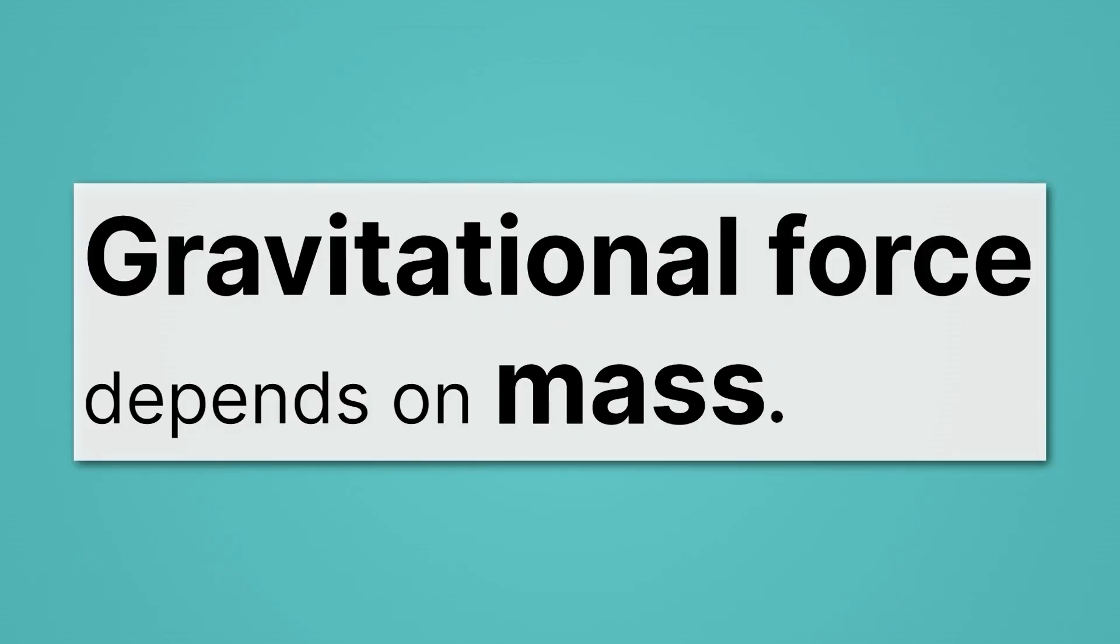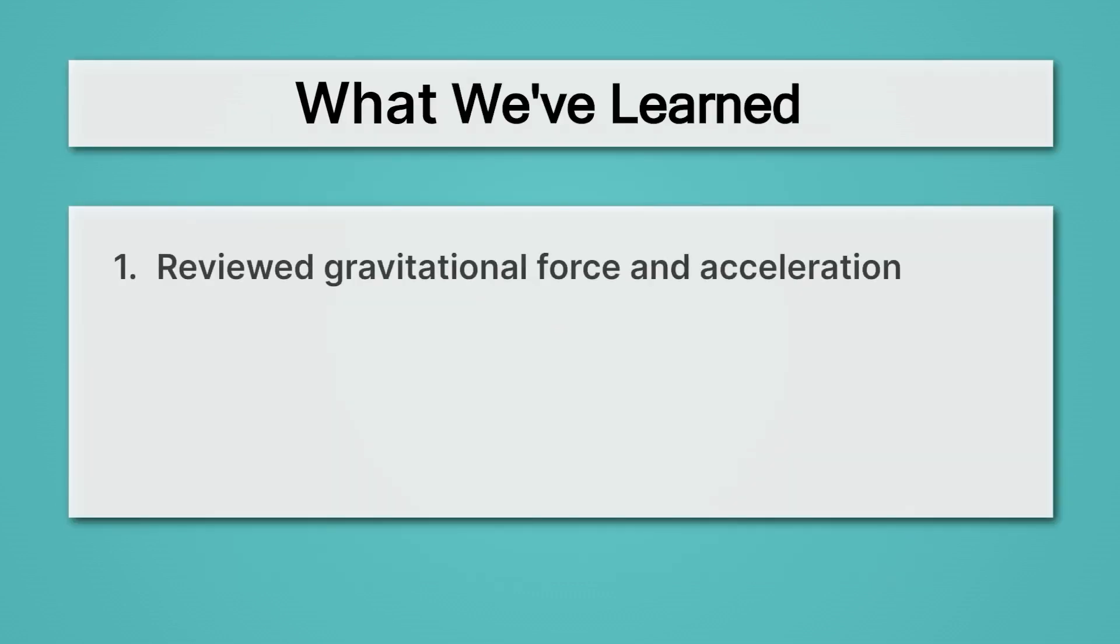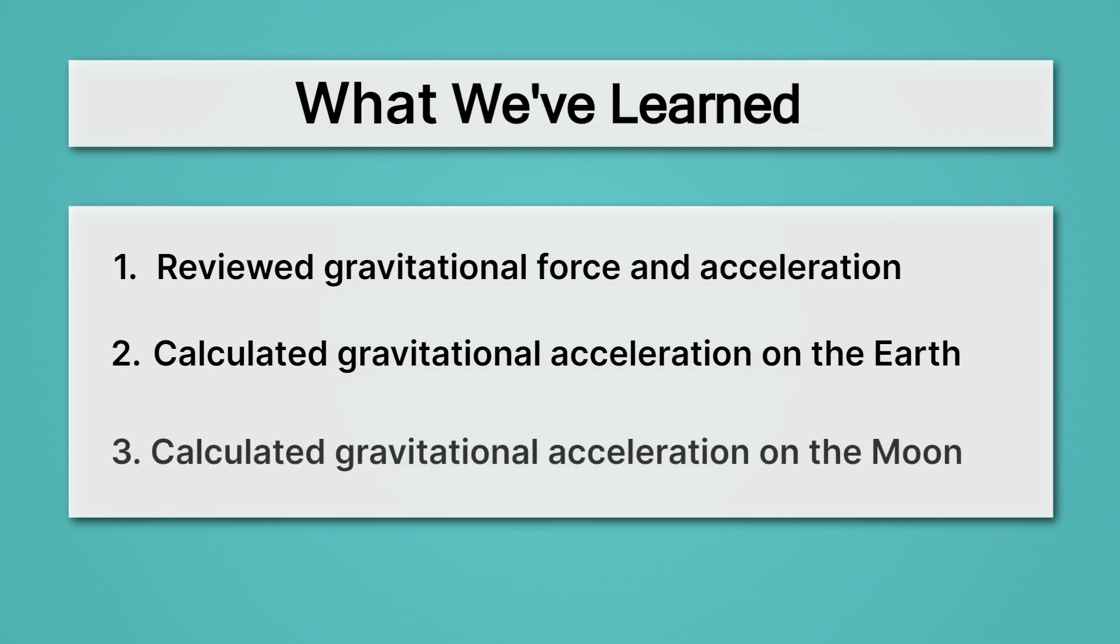So here you have it. Gravitational force depends on mass, but that's not the same as gravitational acceleration. Gravitational acceleration does not depend on mass. So acceleration and force are just two different things. And once we've separated them, we realize how both can be true. What we've learned in this video is we've reviewed gravitational force and acceleration, and then we calculated gravitational acceleration on the earth, and lastly, we calculated gravitational acceleration on the moon.